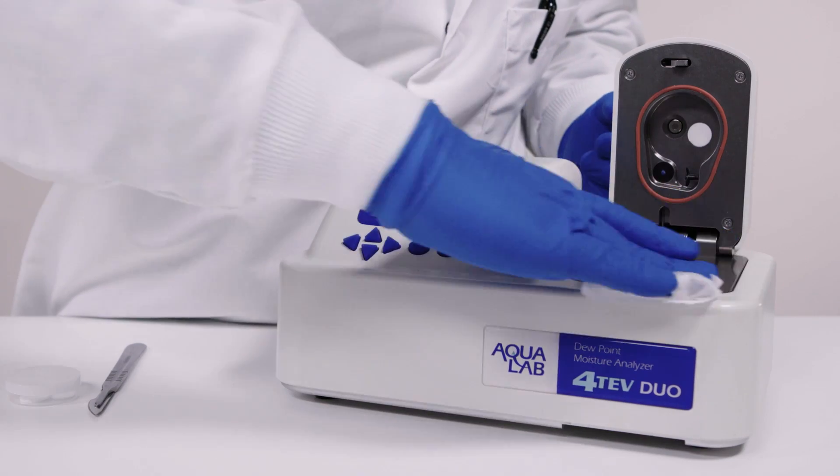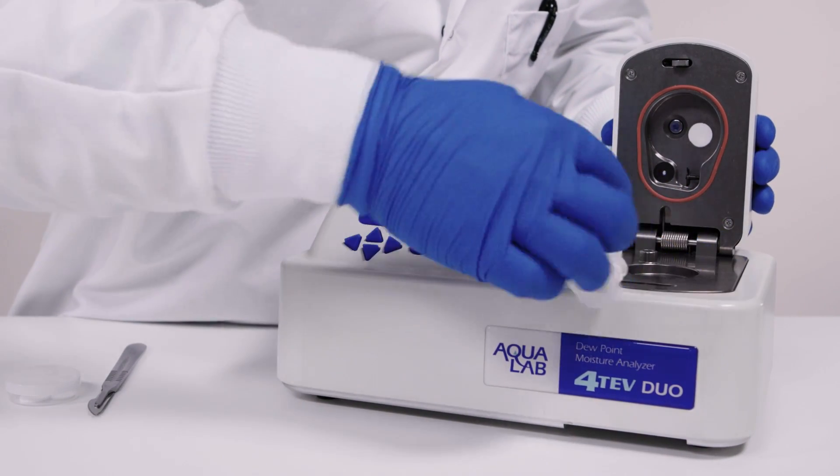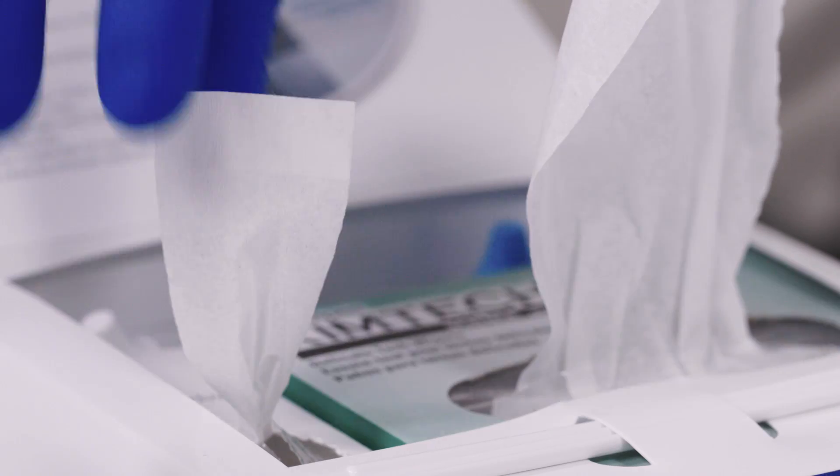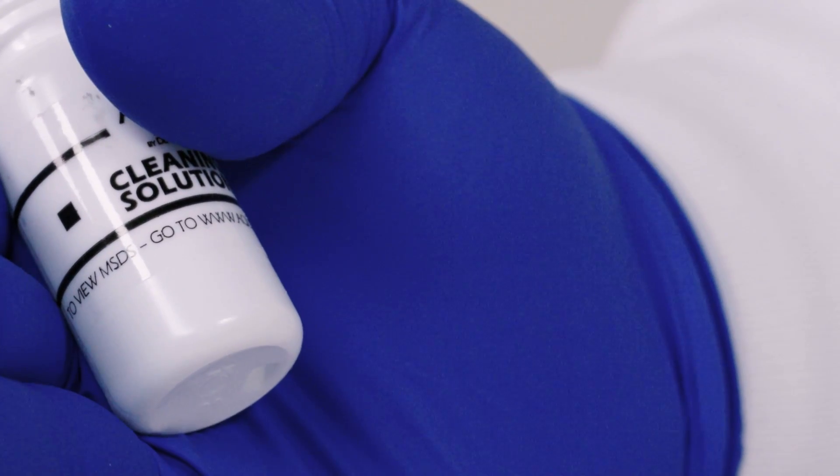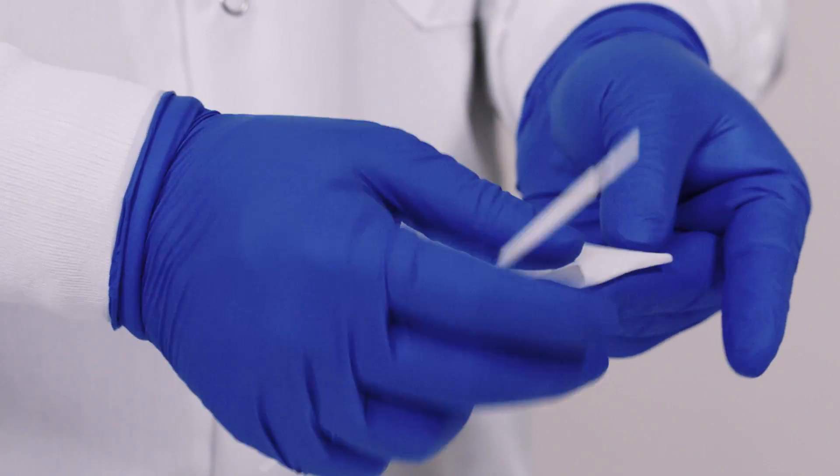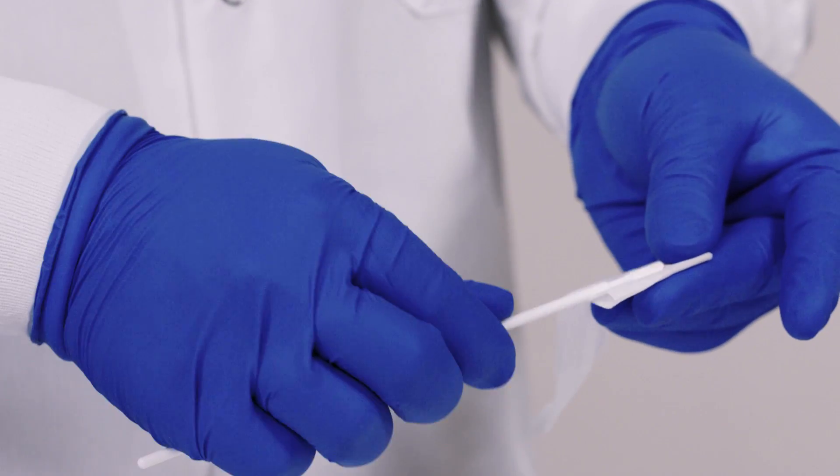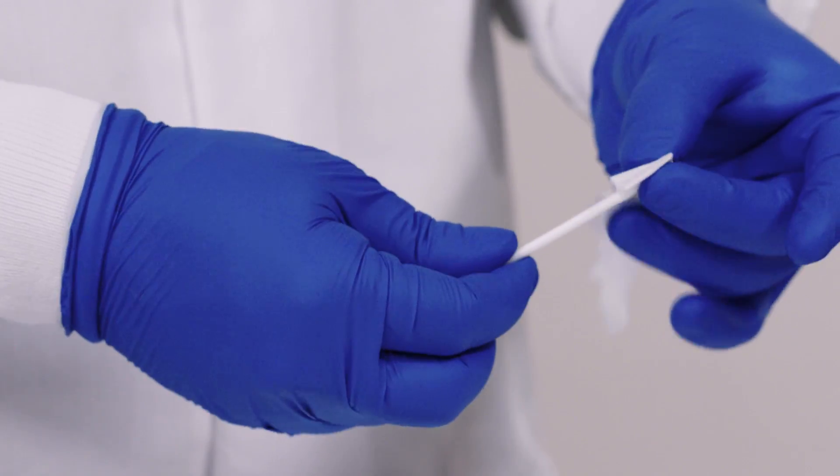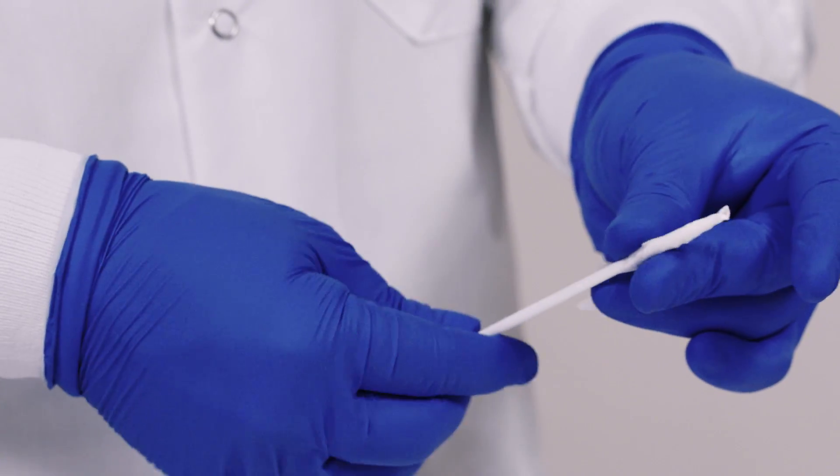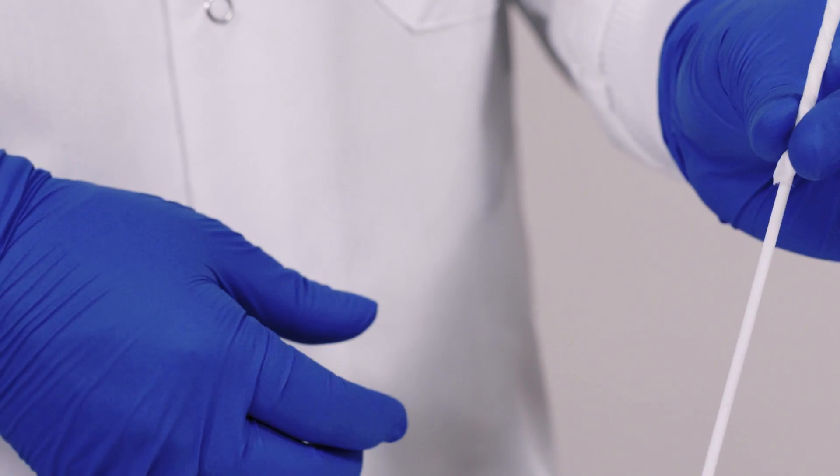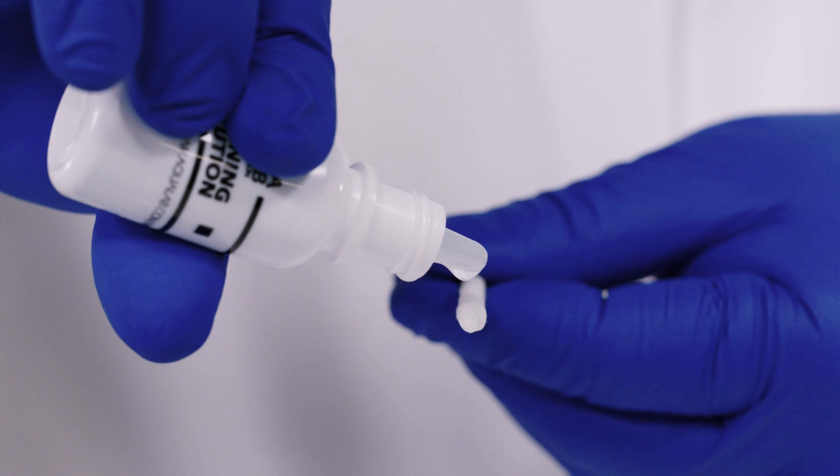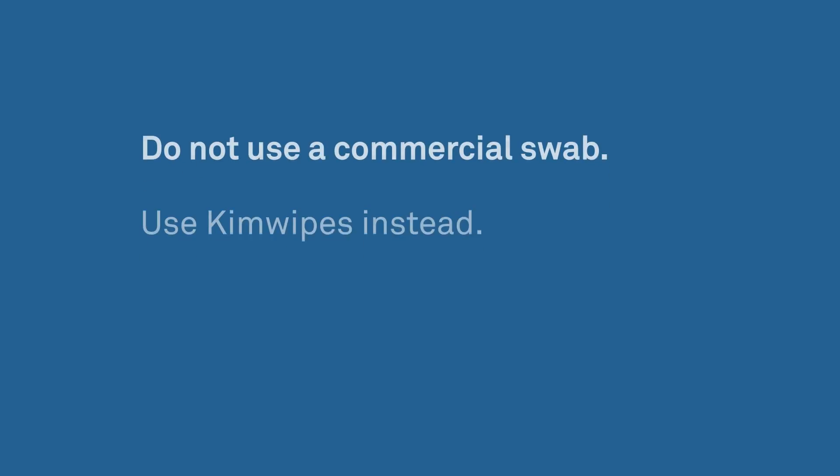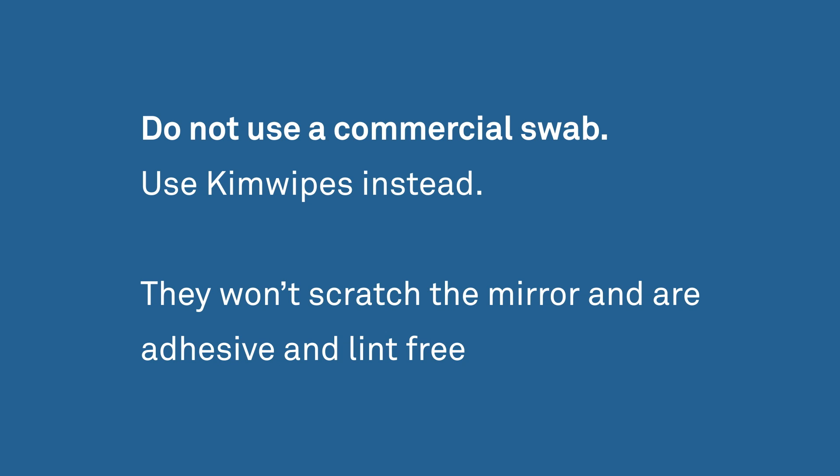Once the surface area of the sample chamber is clean, clean in and around the fan and the sensors. To do this, use a cleaning rod, strips of kimwipes, and isopropyl alcohol or cleaning solution. Wrap a kimwipe strip onto the top of the cleaning stick. The first step to wrapping a kimwipe is to make two folds. One fold over the head of the stick and one over the top to cover the tip. Then twist the stick with one hand while holding onto the kimwipe with your other hand until the head of the stick is covered. It's important not to use a commercial swab because the adhesives used to glue the cotton to the stick will contaminate the mirror and sensors. Kimwipes won't scratch the mirror and are adhesive free and low lint.